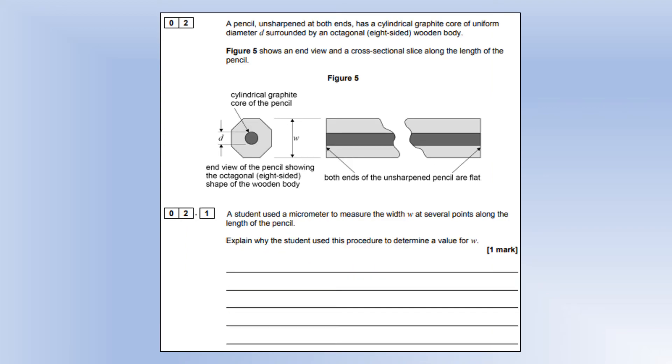A pencil unsharpened at both ends has a cylindrical graphite core of uniform diameter surrounded by an octagonal eight-sided wooden body. Now we've got a diagram showing the end view and the side view. The student uses a micrometer to measure the width at several points along the length of the pencil. Explain why the student used this procedure to determine a value for the width.